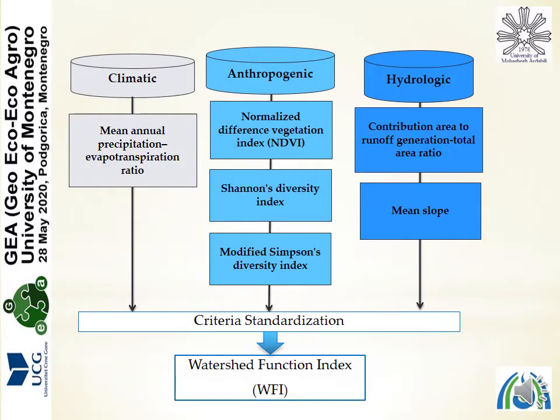Different climatic, hydrologic, and anthropogenic criteria were used to quantify the watershed function index. From the climatic criteria, we selected the mean annual precipitation to evapotranspiration ratio. From the anthropogenic criteria, we used the NDVI, Shannon diversity index, and modified Simpson diversity index. In the hydrologic section, we used contribution area to runoff generation to total area ratio, and slope.